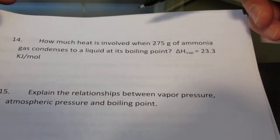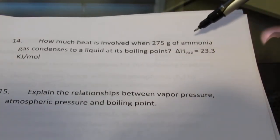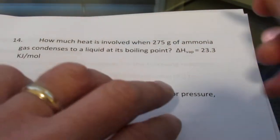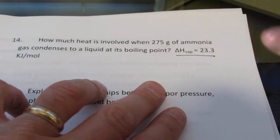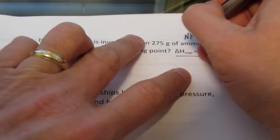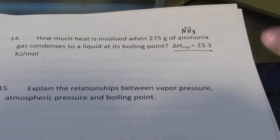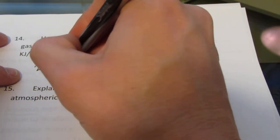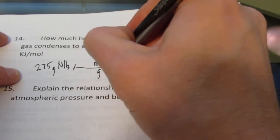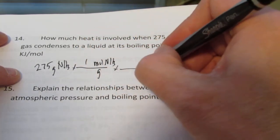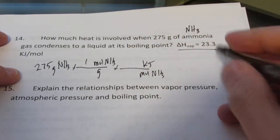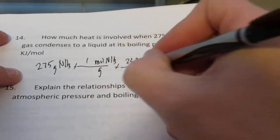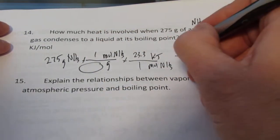We're running out of time, so I don't think we're going to do the entire review. I'm going to talk about each of them quickly. How much heat is involved when 275 grams of ammonia gas condenses to a liquid at its boiling point? So here we're going to use the heat of vaporization instead of the heat of fusion. Ammonia has a formula NH₃. You'd attack number 14 in a very similar way as we attacked 13. We'd start with grams of ammonia, go from grams to moles of ammonia, and then from moles of ammonia to kilojoules required to evaporate it, which is 23.3 kilojoules per mole. And you'd have to figure out the molecular weight on your own.